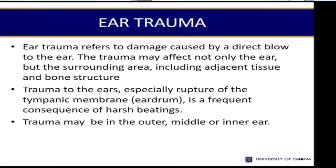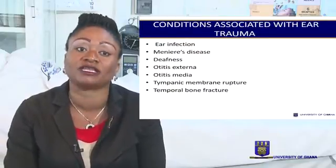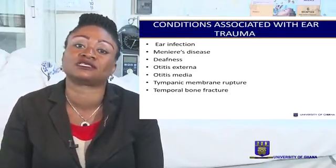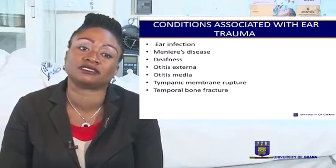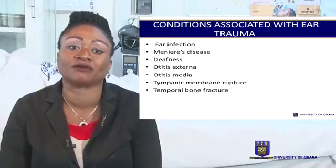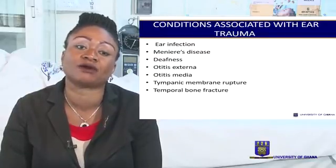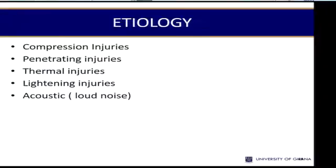Ear trauma refers to damage caused by a direct blow to the ear. The trauma may affect not only the ear but the surrounding area as well, including adjacent tissue and bone structure. Trauma to the ears — especially rupture of the tympanic membrane or eardrum — is a frequent consequence of harsh beatings. Trauma may be in the outer, middle, or inner ear. Conditions associated with ear trauma include ear infection, Meniere's disease, deafness, otitis externa, otitis media, tympanic membrane rupture, and temporal bone fracture.